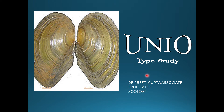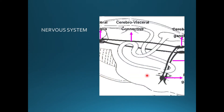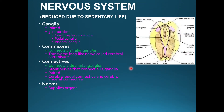Now we will study about the nervous system of UNIO. The nervous system is also in your course in dissection and we will study it in detail. The nervous system is reduced because it leads a sedentary life. It consists of ganglia, commissures, connectives, and nerves.